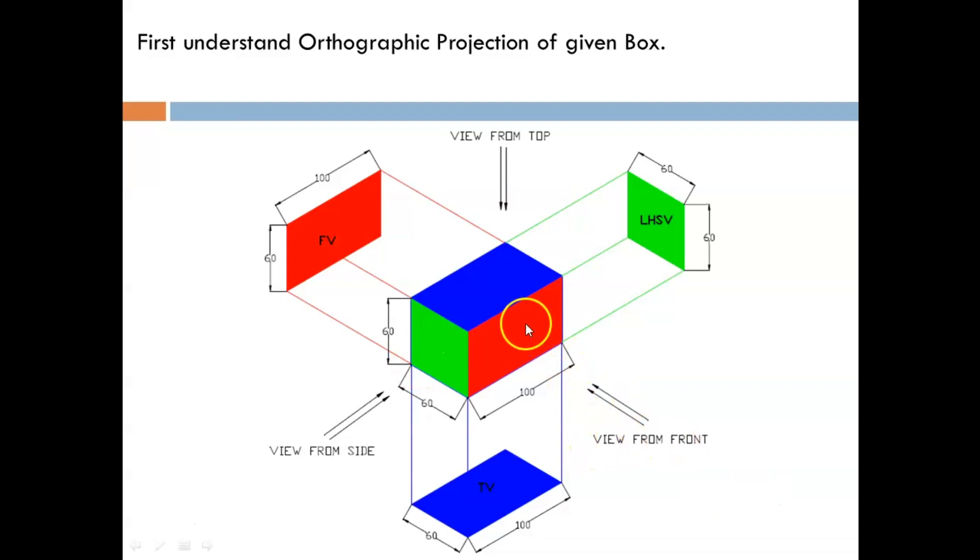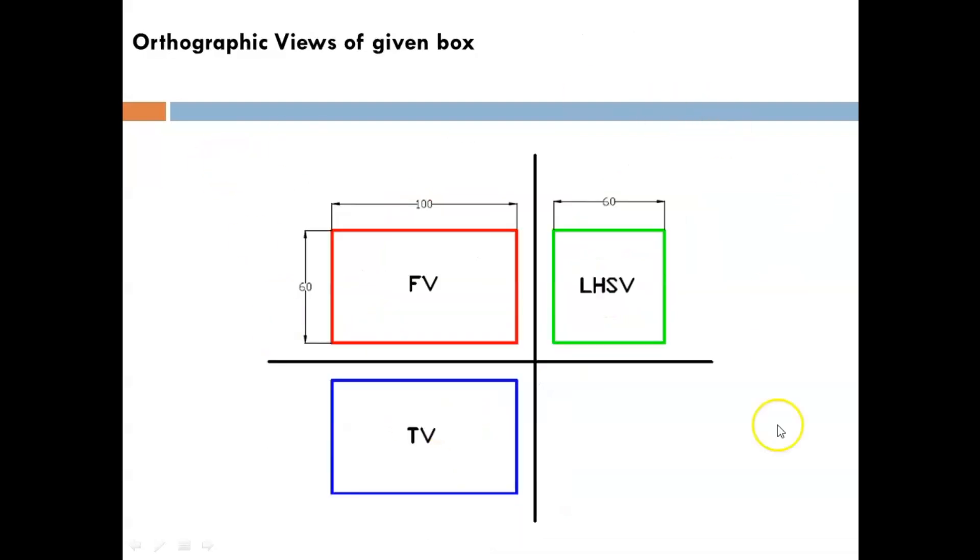This green color surface is visible from the side, and this is the left-hand side view because this direction is for the front. This view gives you the left-hand side view with dimensions of 60 by 60. This is orthographic projection for the given box—front view, top view, and LHSV. This is a standard presentation of orthographic projections.